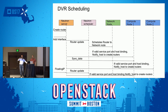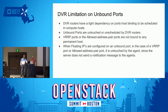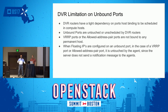This slide captures the limitations: DVR routers have a tight dependency on ports and host binding to be scheduled to compute hosts. Unbound ports are essentially untouched — we don't worry about them. VRRP ports or allowed address pair ports are not bound to any permanent host, so we take no action on them. When floating IPs are configured on these ports, we neglect those ports because they are not host-bound.